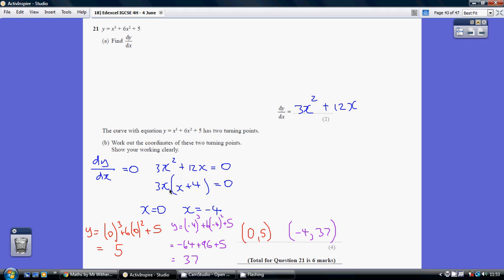So our two turning points are at where x equals 0, because that makes this term 0, 0 lots of whatever is 0. And secondly, x being minus 4, because that makes this bracket 0, 0 lots of 3x is also 0. So that's our x coordinates, 0 and minus 4.